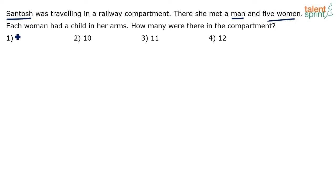Each woman had a child in her arms. Five women, each with a child, so five children total. The count is: 5 children, 5 women, 1 man, and 1 Santosh. The total: 5+5+1+1=12. So option 4, 12, is the answer.